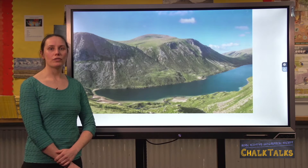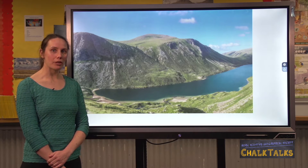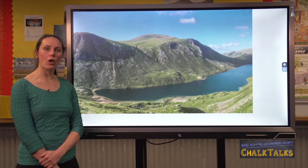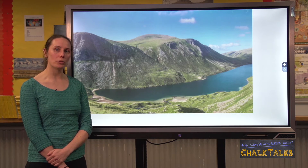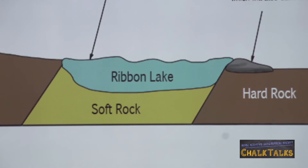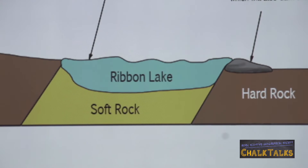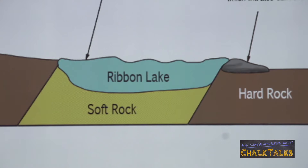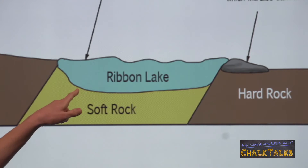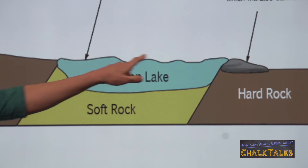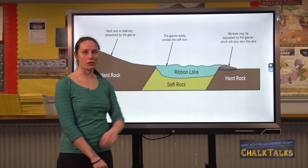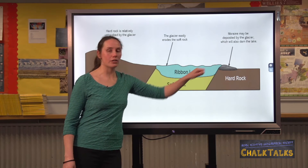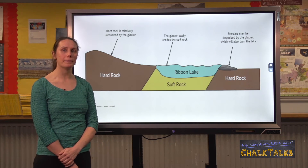The last erosional feature you may be asked to explain is a ribbon loch. As seen with Loch Avon, a ribbon loch is a long, narrow piece of water in the bottom of a U-shaped valley. In your explanation you would mention differential erosion — if there's an area of softer rock, it would be eroded quicker and easier by the glacier, resulting in a deeper area where water accumulates. Sometimes moraine deposited by the glacier also acts as a dam and traps water behind it.